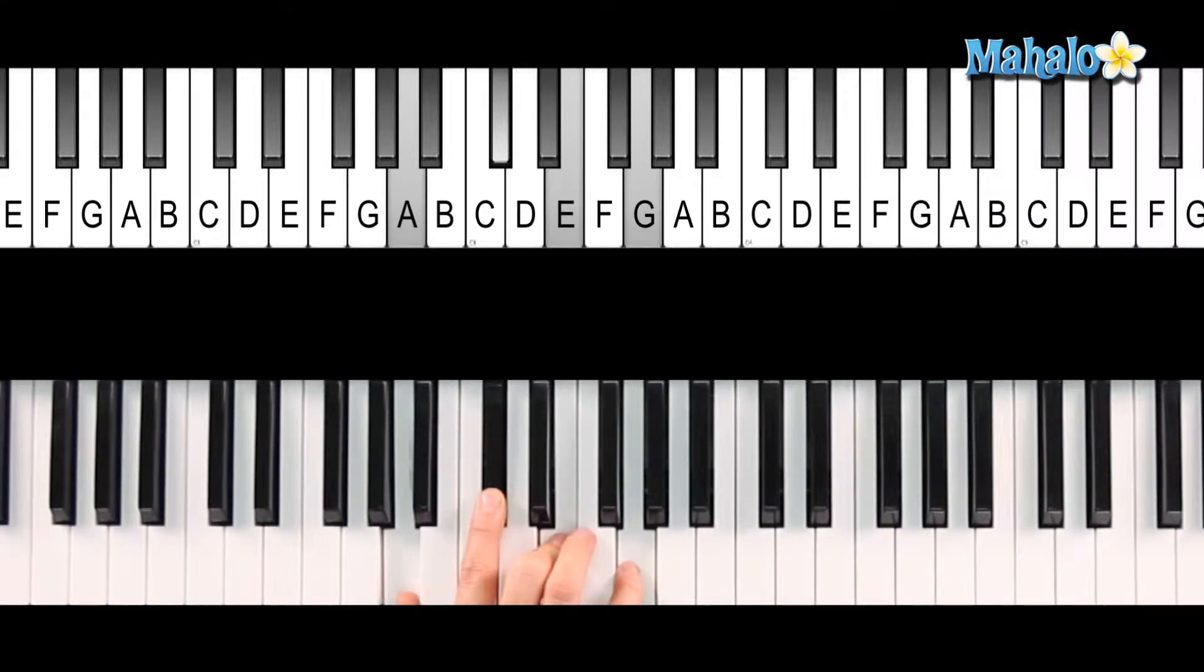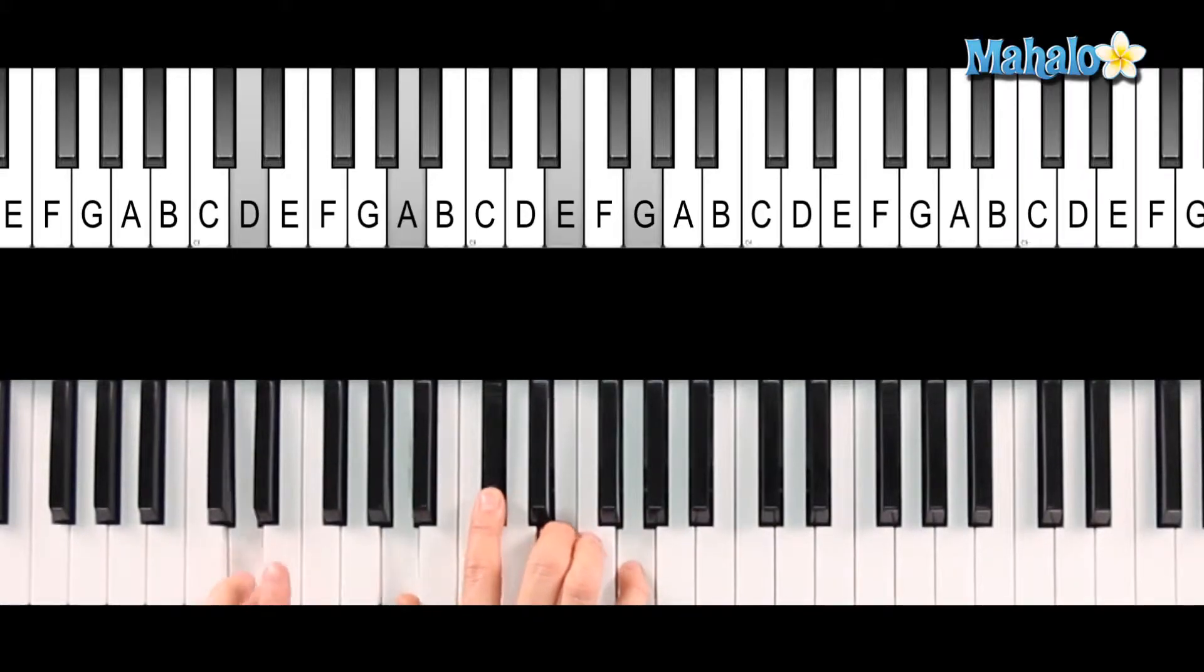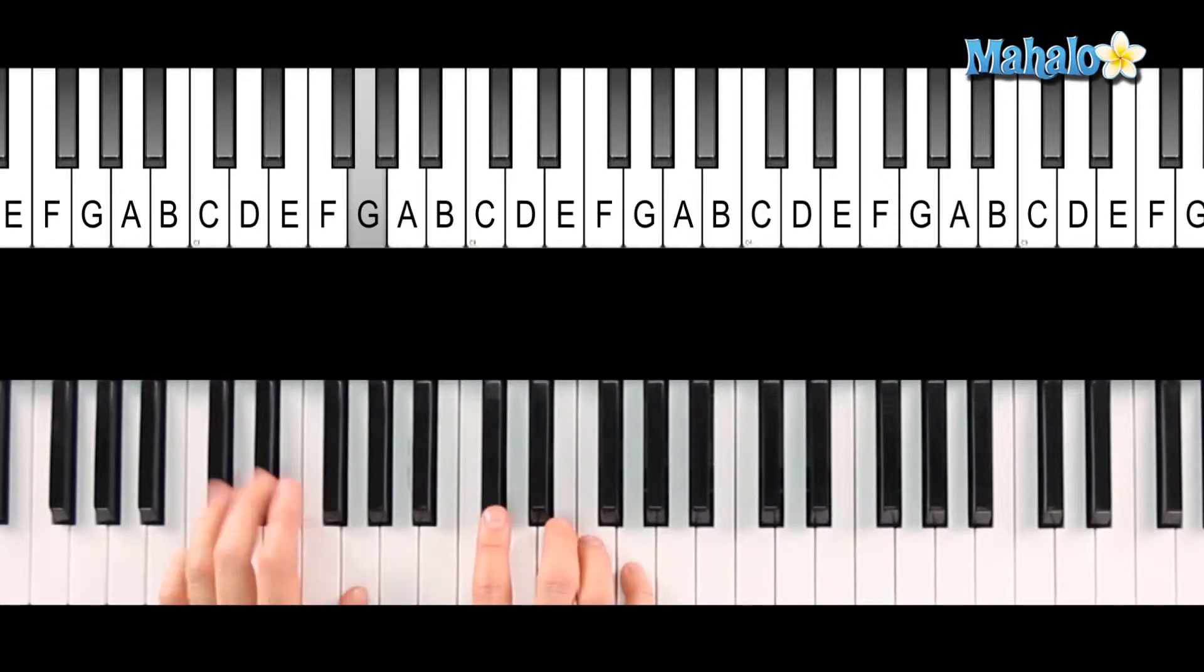If you're in the key of D major, A is the fifth degree of that scale. So it's the 5, it's the dominant 7. So we're in D, F, F sharp, G, A.